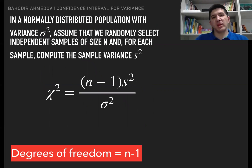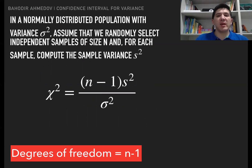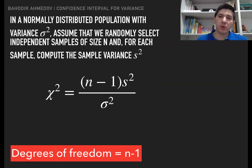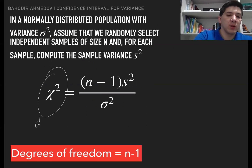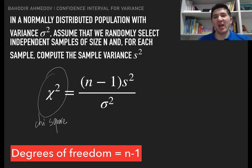If the population has a normal distribution with variance sigma squared, assume that randomly selected independent samples of size n are taken and for each sample the sample variance s squared is computed. Then this mathematical quantity — chi-square — is going to have the chi-square distribution.